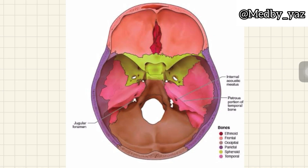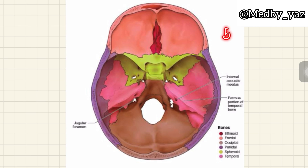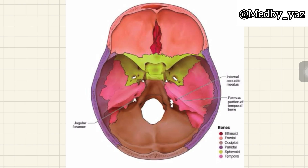The petrous apex is in close relation with the brainstem, which starts here and continues down as the spinal cord. The fifth and sixth cranial nerves arise from the pons and pass anteriorly through the petrous apex, while the seventh and eighth cranial nerves pass through the internal auditory canal. That's it about the petrous part of the temporal bone — hope you understood. Thank you.